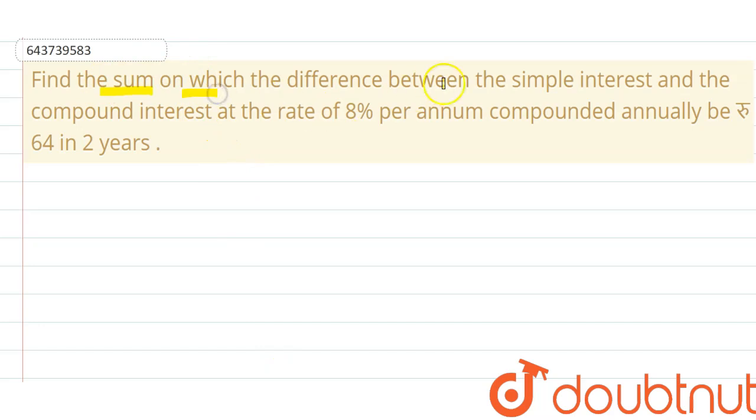the sum on which the difference between the simple interest and the compound interest at the rate of 8% per annum compounded annually be 64 in 2 years. So in this question, for 2 years we have to calculate...